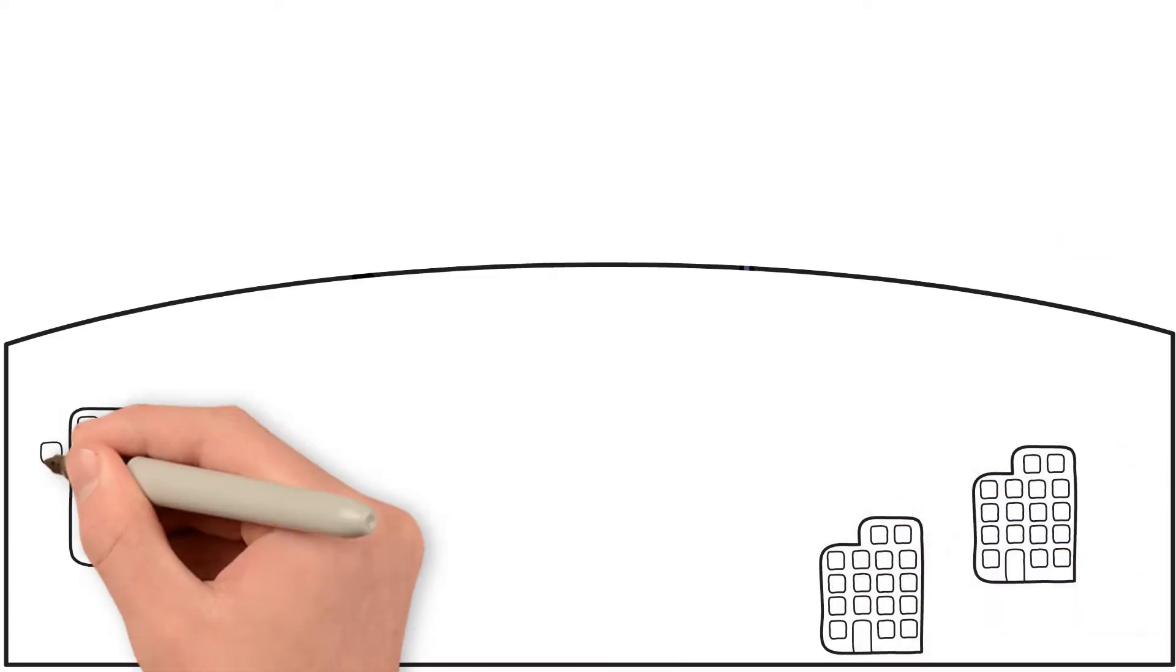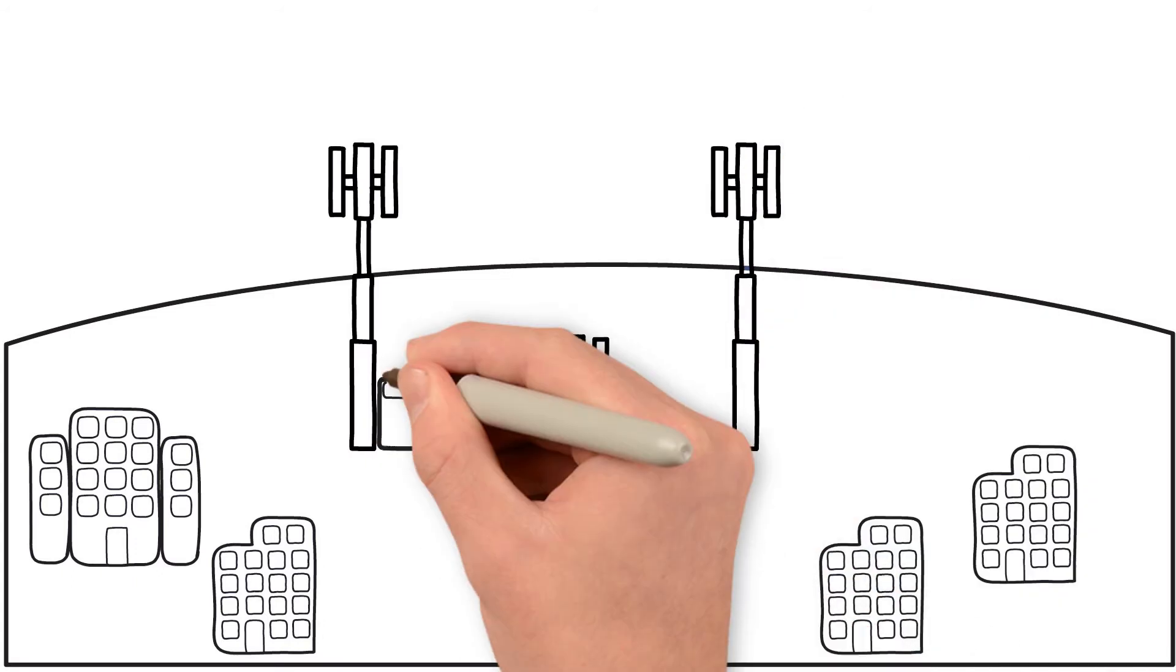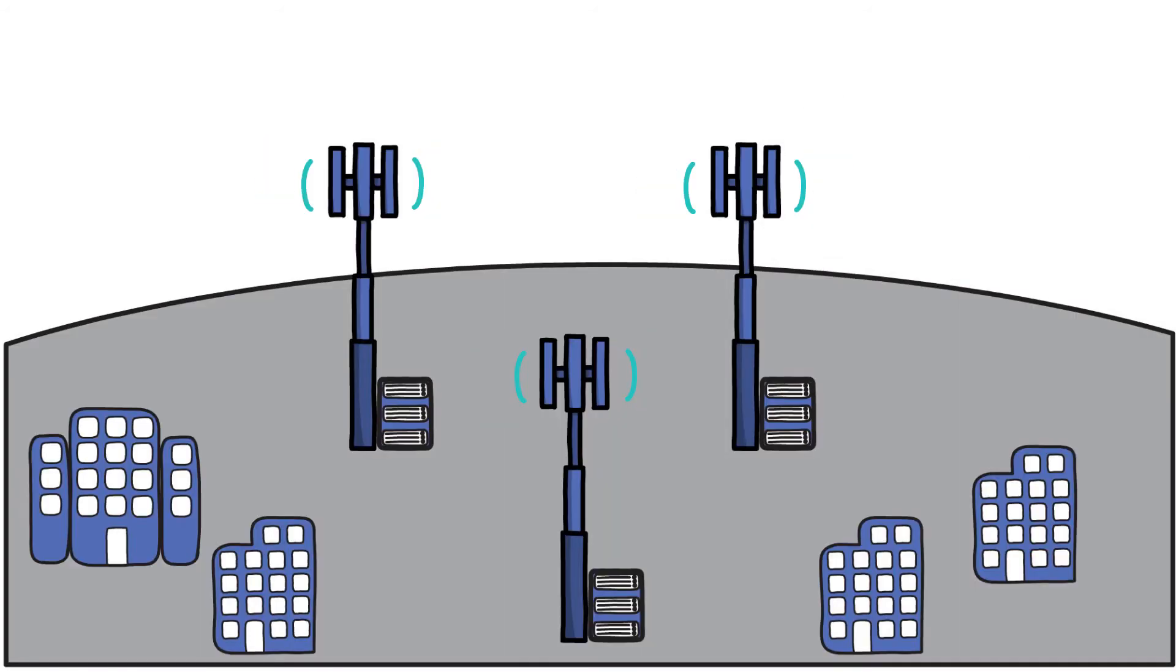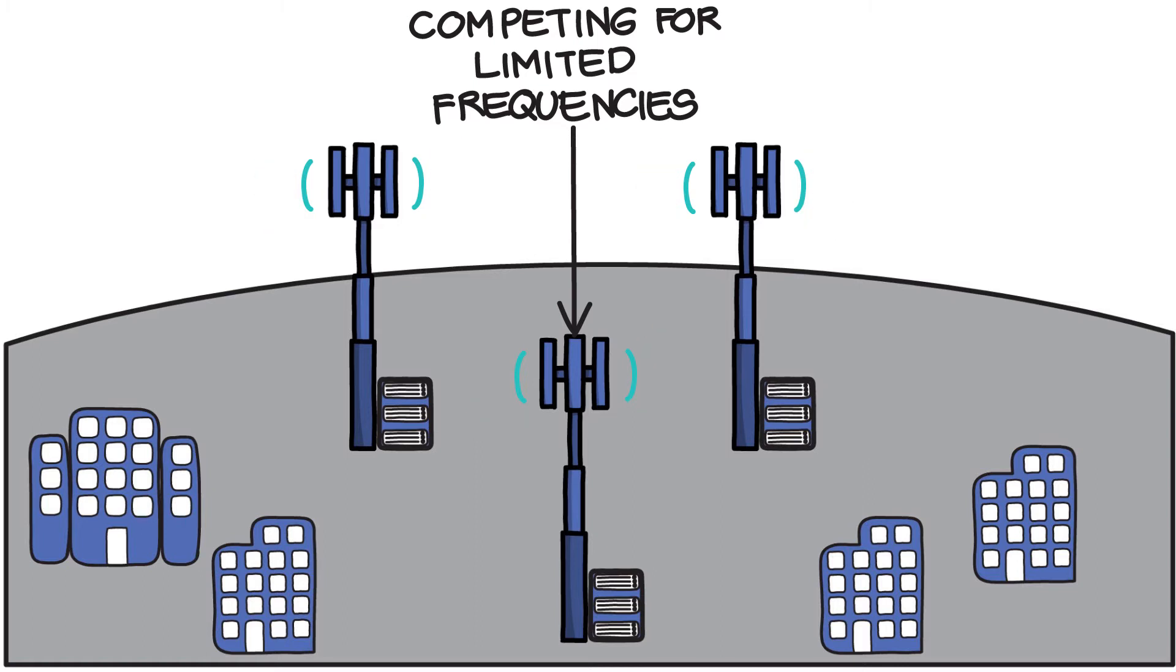Inefficient use of radio frequency. In large cities, many radio cells are cramped in a relatively small area. The lack of coordination between independent cells forces the antennas to compete for the limited radio frequencies available.